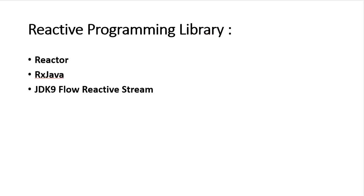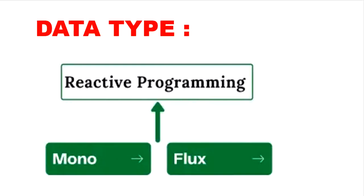Now let's understand which libraries publisher and subscriber use. The reactive programming libraries are Reactor, RxJava, and JDK 9 Flow reactive stream. In our example we are going to use Project Reactor, which is the recommended library to work with the Spring Boot framework. Project Reactor has two data types: Mono and Flux. Mono is used to support only a single element, while Flux can support n number of elements.